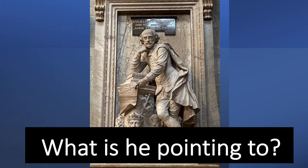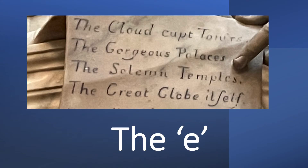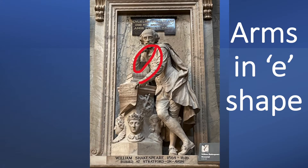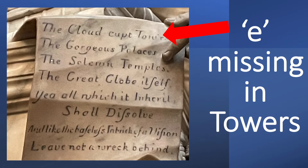Solving Shakespeare in 60 seconds. What is he pointing to? He's pointing to the E in 'temples.' His arms are in an E shape and the ears are missing in towers.